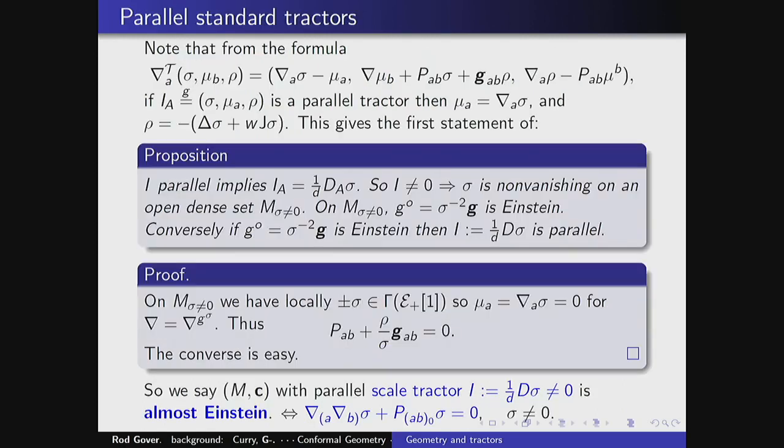Let's look at the parallel condition in a little detail. Here's the formula for the tractor connection. Our tractor is a triple: in the middle it has a one-form field (weighted), then σ which is a density of weight one — think of it as a function — and ρ which is a density of weight minus one. The formula for the connection is the Levi-Civita connection on each of those, plus an algebraic correction mixing those slots with bits of the metric and curvature.